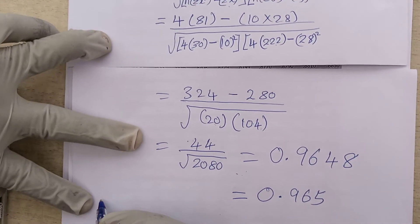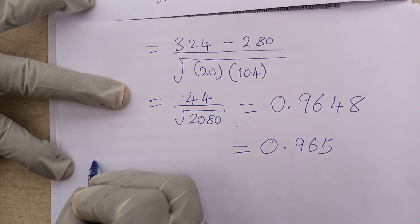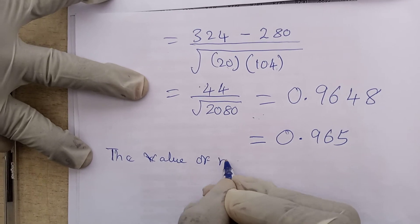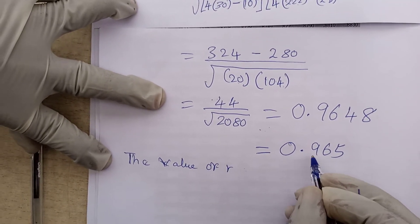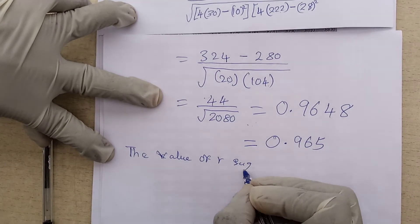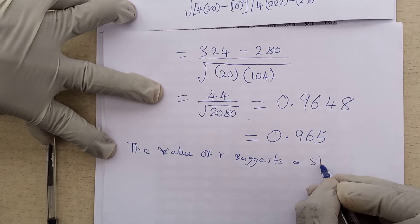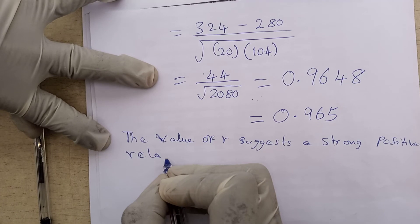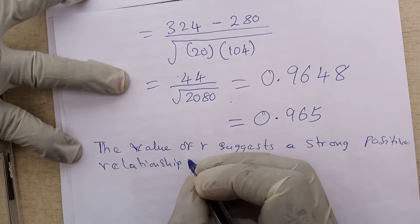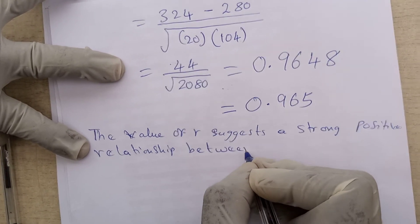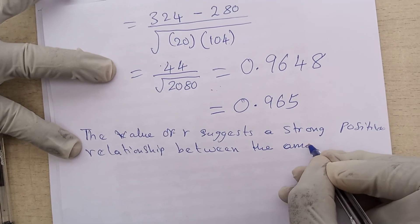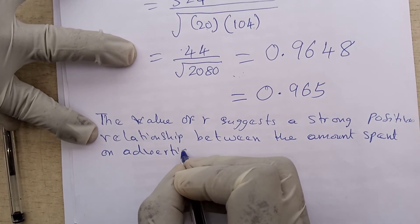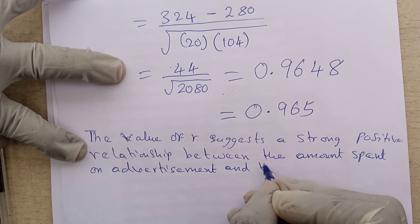So this is the coefficient of correlation. To interpret it, you say: the value of R, that is 0.965, suggests a strong positive relationship between the amount spent on advertisement and the sales revenue.